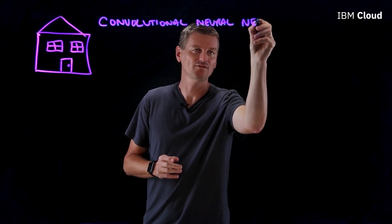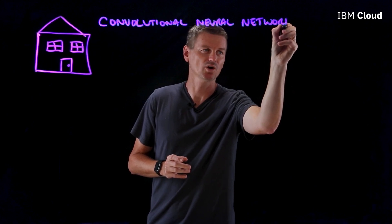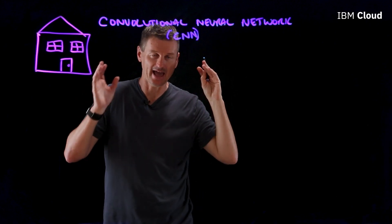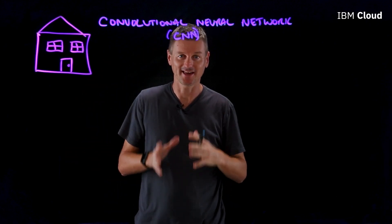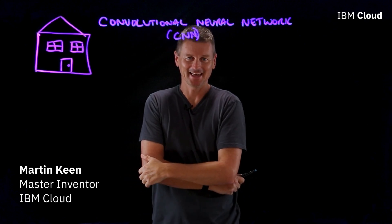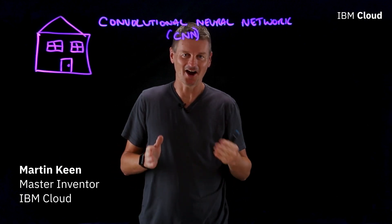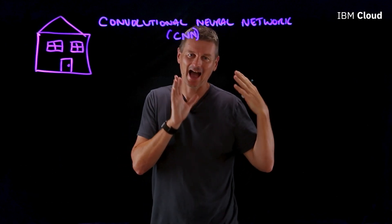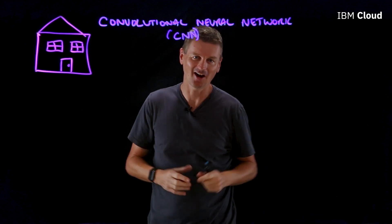Now, a convolutional neural network or a CNN is an area of deep learning that specializes in pattern recognition. My name is Martin Kean, and I work in the IBM garage at IBM. Now, let's take a look at how CNN works at a high level.